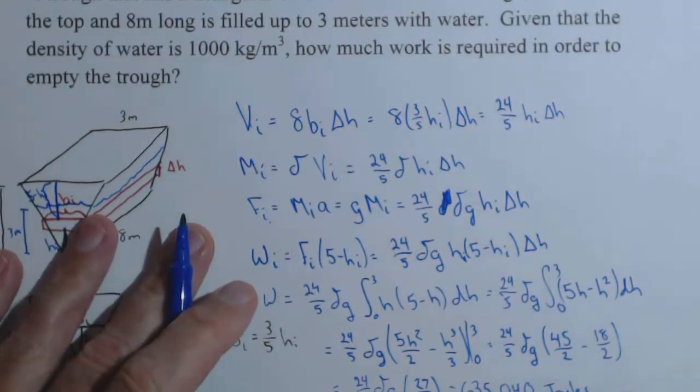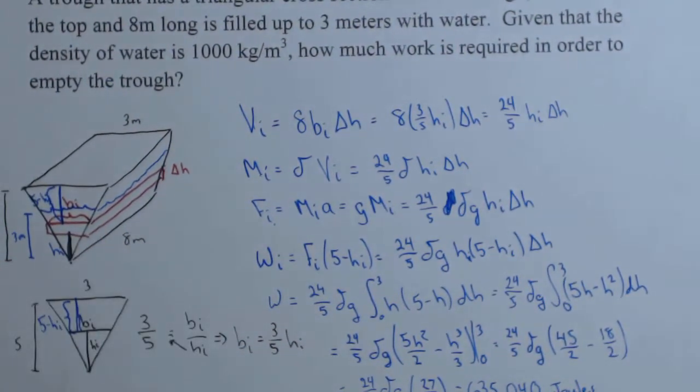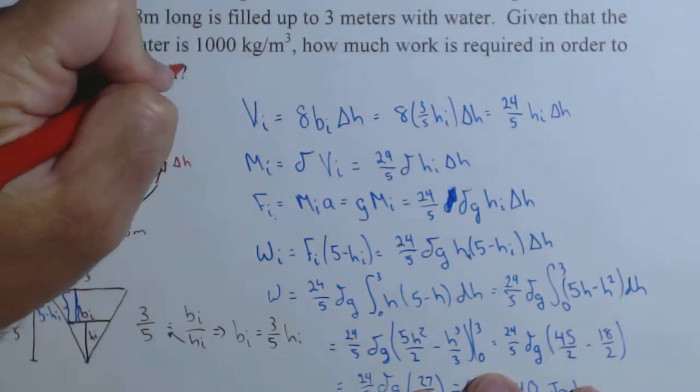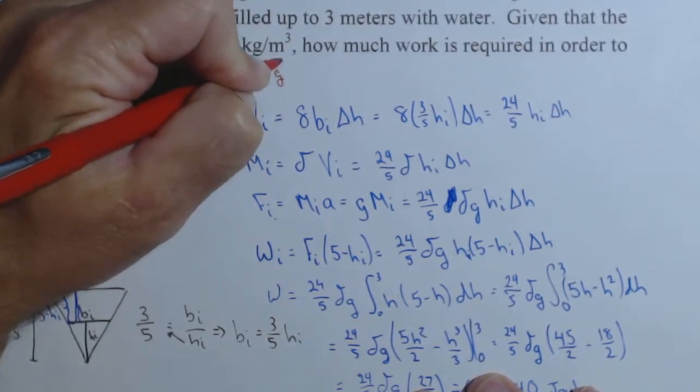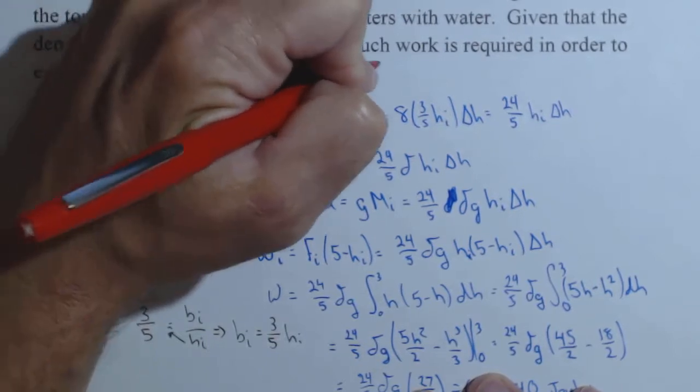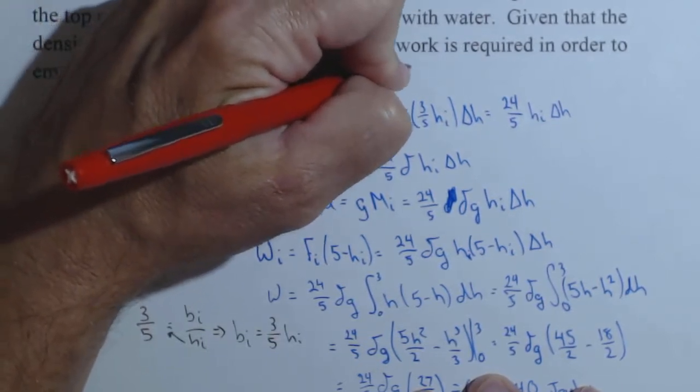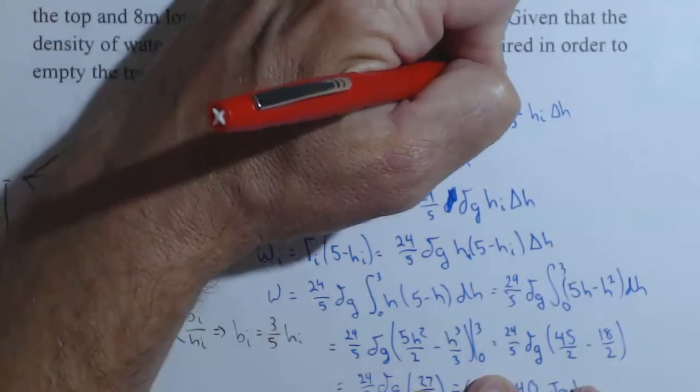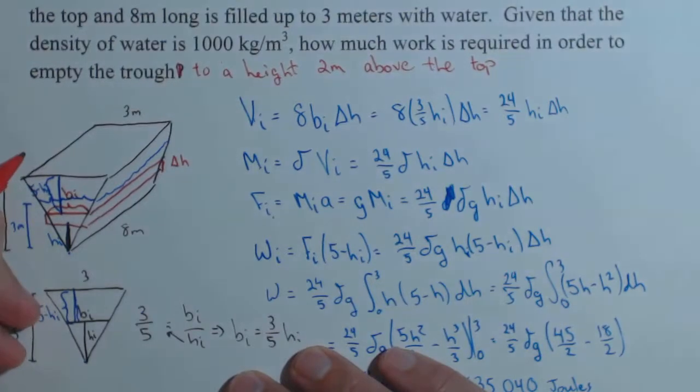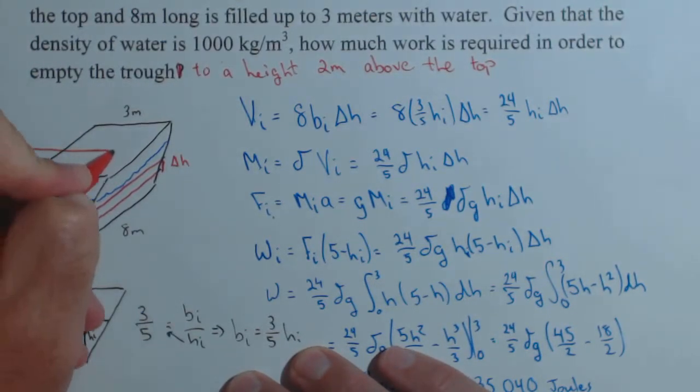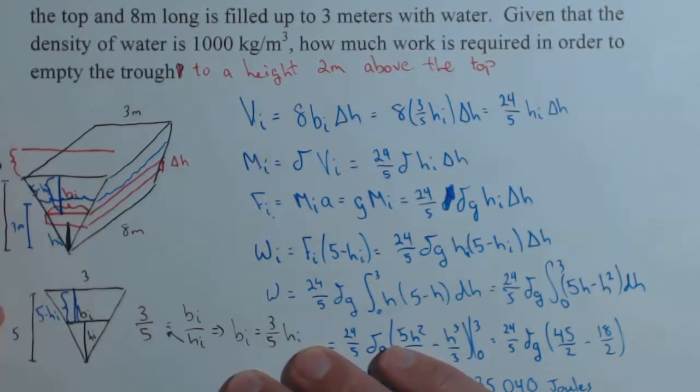Now, let's make one alteration of the problem. We're not going to redo everything, but I'm going to make one small alteration and just show you how the integral would change. Let's see how much work is required to empty the trough to a height 2 meters above the top. Let's see how that affects our drawing. So now we're trying to get up to here, which is 2 meters.